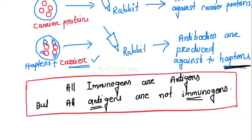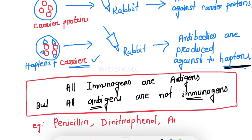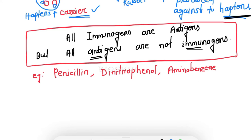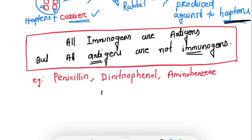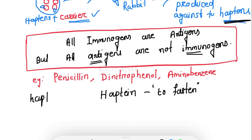Examples of haptens are penicillin, dinitrophenol, and aminobenzene. The word hapten is derived from the Greek word 'haptein,' meaning 'to fasten.' When hapten becomes tightly fastened to a carrier molecule, it becomes immunogenic.